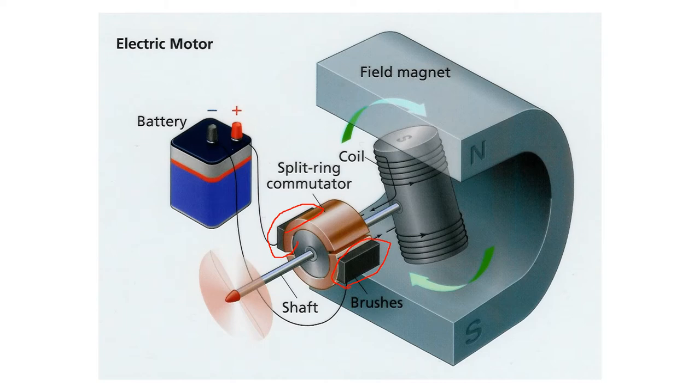One commutator is connected to one of the brushes, and one commutator is connected to the other brush. As the shaft spins, the brushes will switch sides, which causes the commutator, which is connected to the coil. The commutator going to the coil this side, and that one is going to the other one.